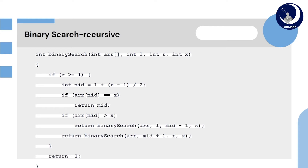Now let us see the code for binary search using recursion. First, we will create a function int binarySearch. We will pass parameters: array, int l, int r, and int x. Here, l is the left value of the array, r is the right value of the array, and x is the item to be searched.